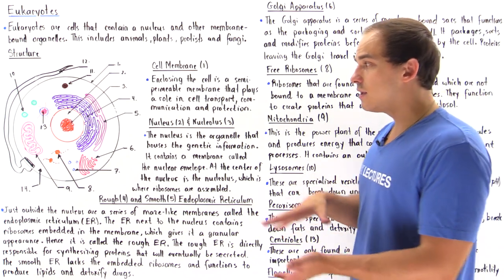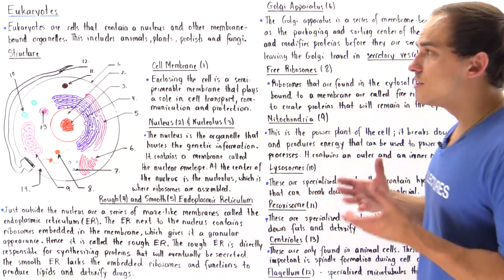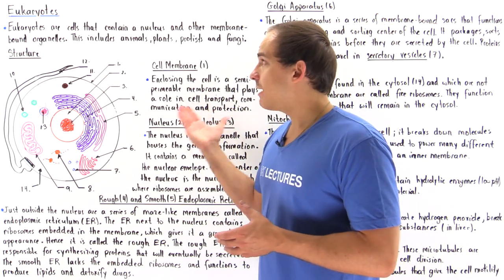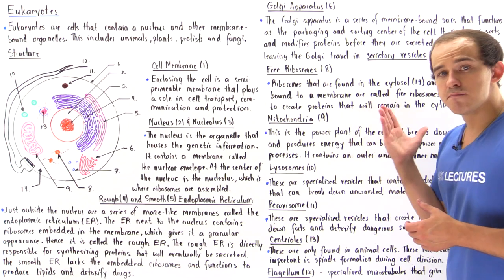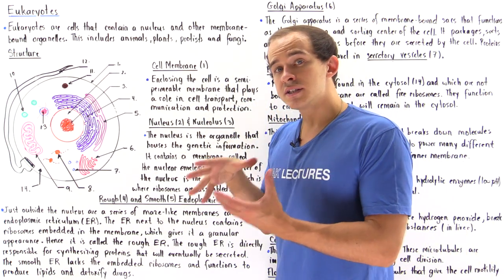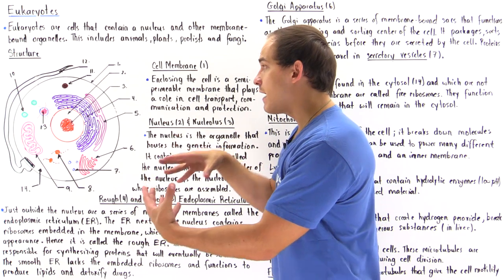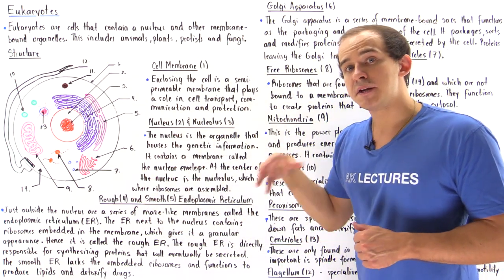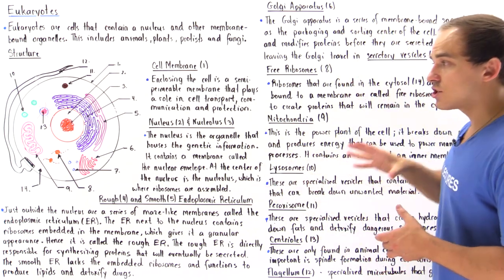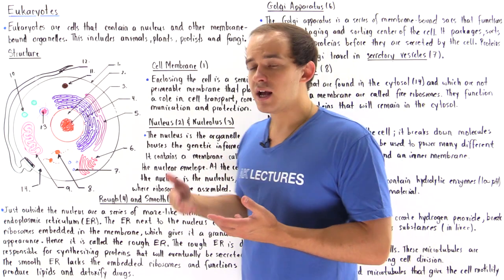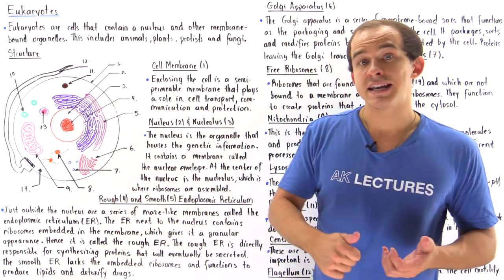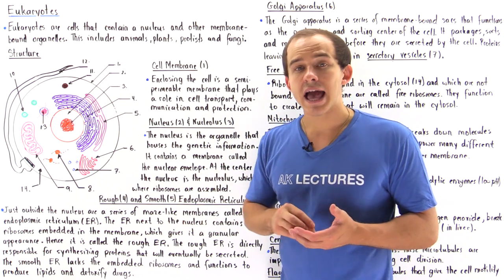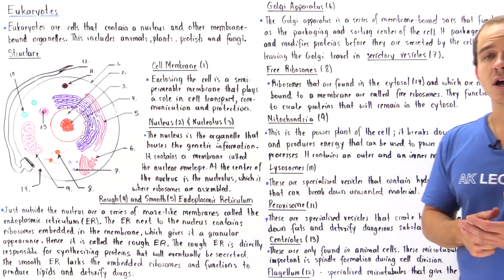We're going to discuss different types of organelles that exist within the eukaryotic cell. Let's begin with the outermost structure that every single eukaryotic cell has — the cell membrane. Enclosing the entire cell is a semi-permeable phospholipid bilayer that plays a role in cell transport, allowing things into and out of the cell. It also functions in cell communication as well as protecting the cell from outside sources of harm.